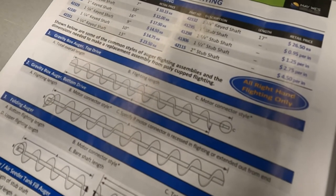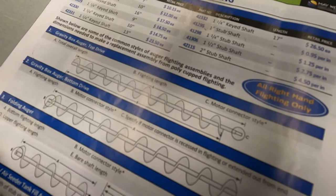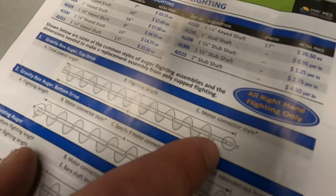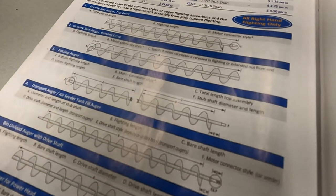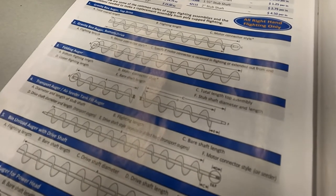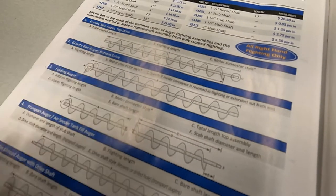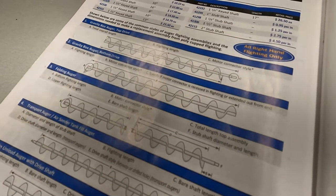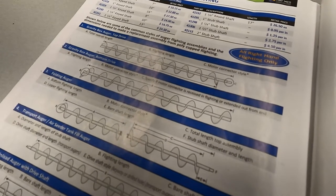So let's place an example order. I have a gravity box auger top drive with a one inch stub shaft motor connector. The overall length of my gravity box top drive auger is going to be 16 feet. My tube has a seven inch diameter. I am going to use this auger to handle seeds.